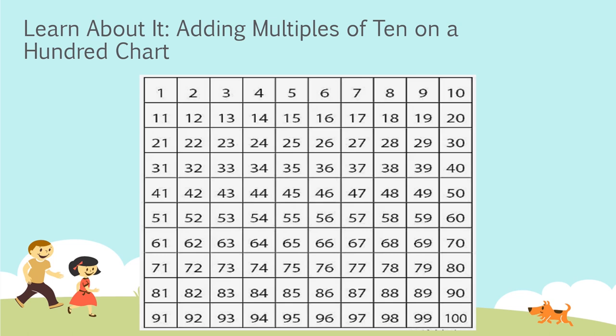Here's an example of how to add 27 plus 10. We could count by ones like this. We could start on 27 and count 1, 2, 3, 4, 5, 6, 7, 8, 9, 10.